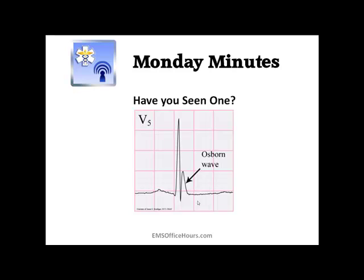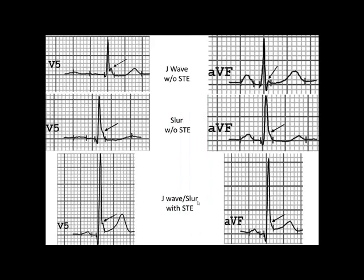Here's another quick picture referencing the J wave and ST elevation. I've got some V5 shots here showing the J wave without ST elevation — you can pretty clearly see it there. Now here is what they call a slur — you can't really see it all too much, but if you look really closely you might be able to kind of make it out. And then the J wave with the slur on the bottom you can make out here in V5, with ST elevation.